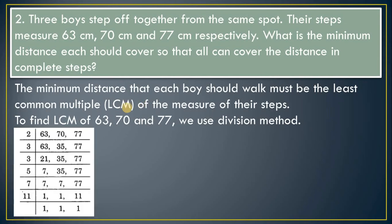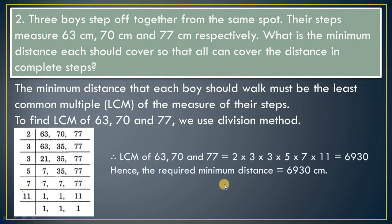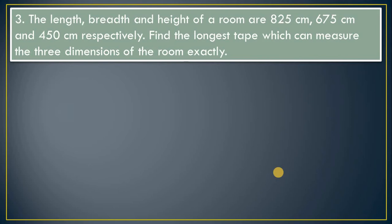Using the LCM method with three numbers, divide continuously — start by dividing by 2 or 3, continuing until you get 1, then multiply all divisors. The LCM comes out to 6930. Hence the required minimum distance is 6930 centimeters.